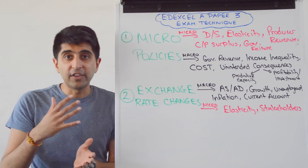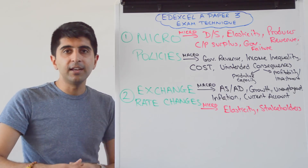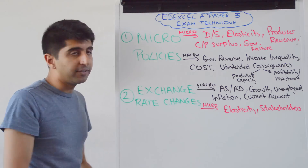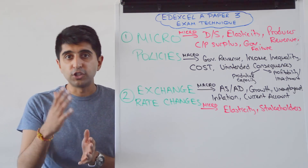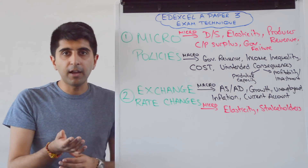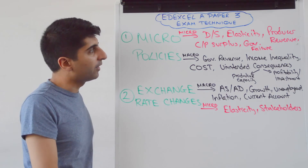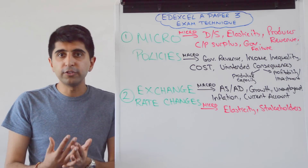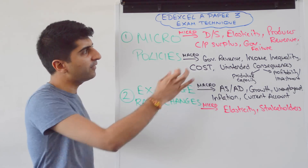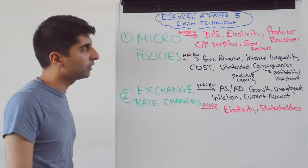For micro-effects, obviously the impact on demand and supply. You would draw a market, maybe shifting a supply curve or a demand curve depending on what the policy is. If it's an indirect tax, you'd shift supply to the left, or supply upwards. Maybe it's a market failure diagram — MPC will shift upwards. Then the impact on price and quantity: higher price, lower quantity. Simple stuff for a demand-supply-related micro-effect.